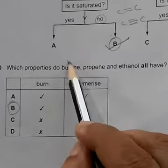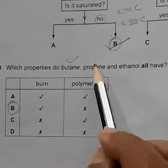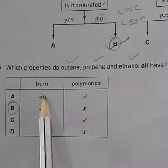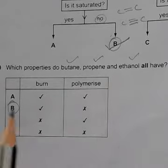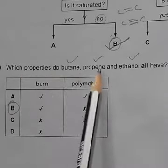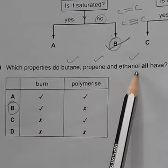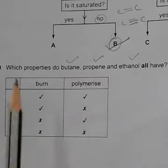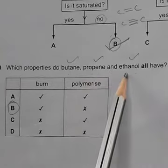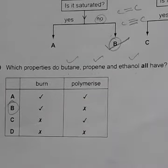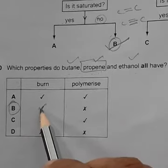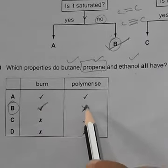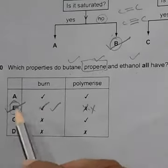Question 40: Which properties do butane, propane, and ethanol all share — burns and/or polymerizes? All organic compounds burn, so butane, propane, and ethanol all burn producing carbon dioxide and water. However, only compounds with C=C double bonds polymerize, so not all of them polymerize. Option B — burns only — is the answer.